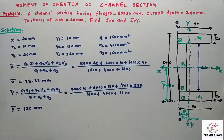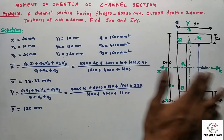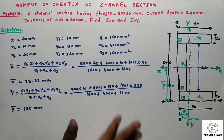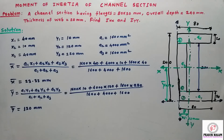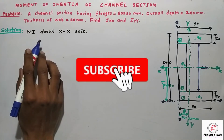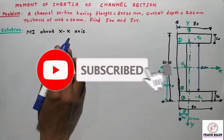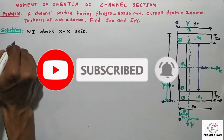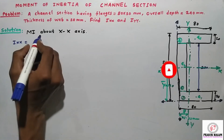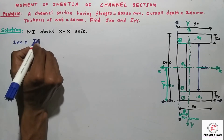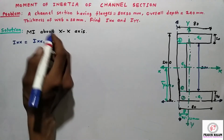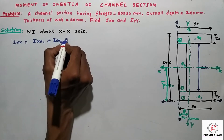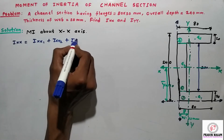Now find the moment of inertia about the XX axis and the YY axis using the parallel axis theorem. Moment of inertia about the XX axis: Ixx equals Ixx1 plus Ixx2 plus Ixx3, where each term uses the parallel axis theorem.